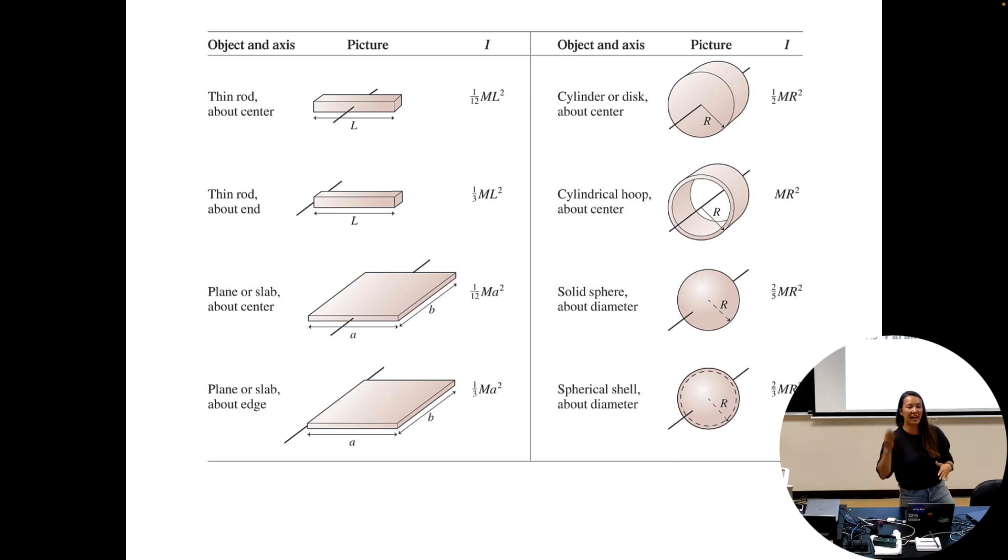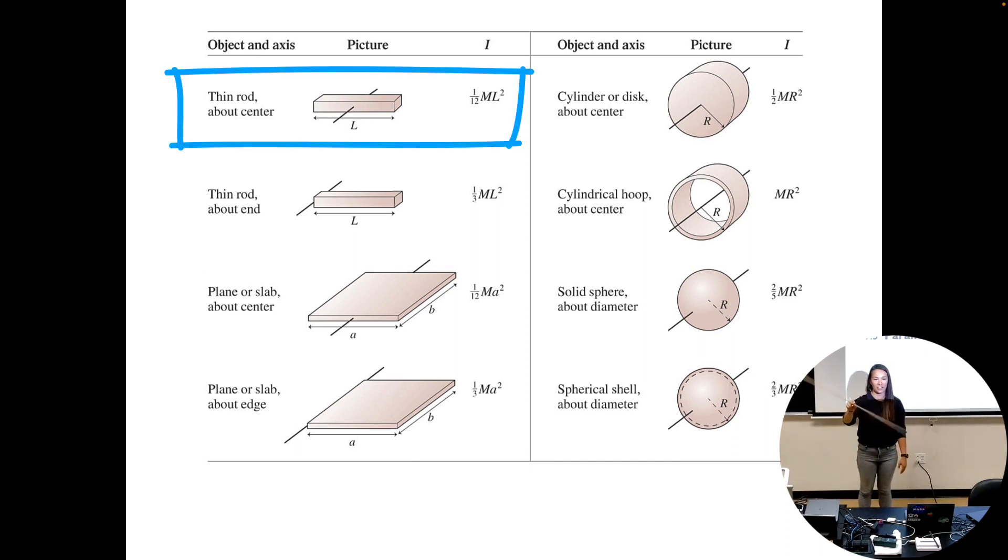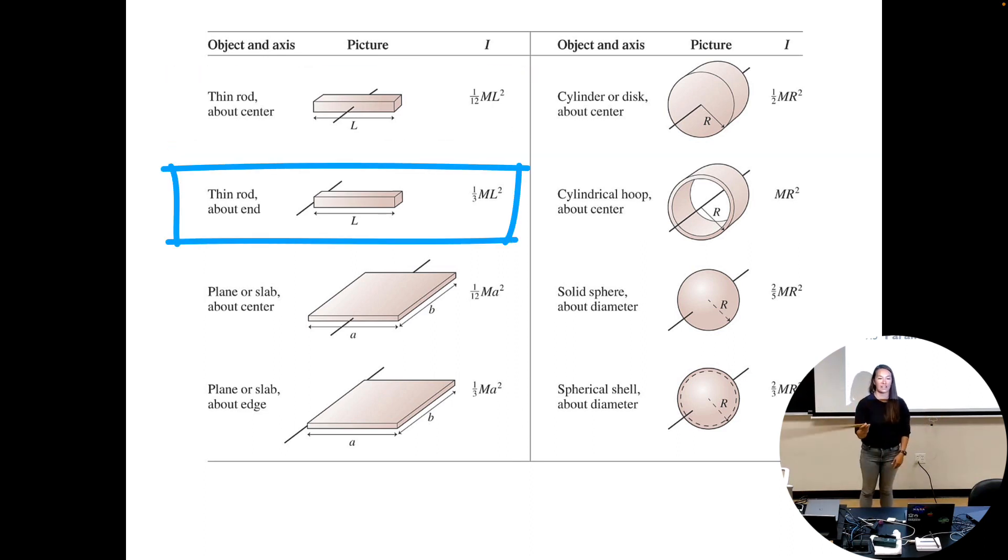If you have something that's not in the middle or on the end of an object, the easiest way to calculate what the moment of inertia is for that object. So for instance, we know we can calculate the moment of inertia if I'm spinning this around the center, that's going to be one-twelfth mL squared where it's the mass of the meter stick and the length of the meter stick. If I rotate it around the end, that's one-third.